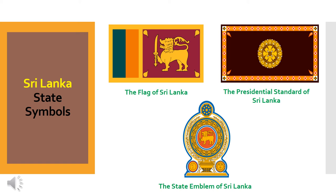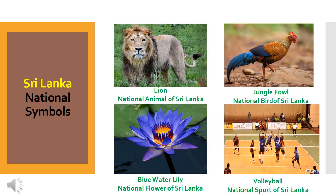Here are the three very important state symbols of Sri Lanka. These are: the flag of Sri Lanka, the flag of the President of Sri Lanka, and the state emblem of Sri Lanka. These are the national symbols of Sri Lanka. Lion is the national animal of Sri Lanka. Jungle fowl is the national bird of Sri Lanka. Blue water lily is the national flower of Sri Lanka. And volleyball is the national sport of Sri Lanka.